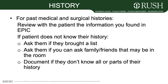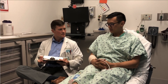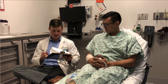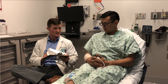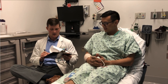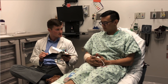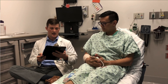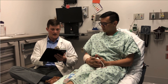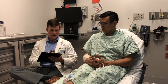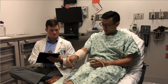For past medical and surgical histories, review with the patient the information you found in EPIC. If the patient doesn't know their history, ask if they brought a list, or ask family or friends in the room with the patient's permission. Document anything unknown. In the demo, Derek reviews: 'I see you have a history of diabetes diagnosed in 2014, congestive heart failure diagnosed in 2009, and hypertension since 2002 — is this correct?' The patient confirms. Derek also confirms an appendectomy in 1988, and the patient adds a recent mole removal two weeks ago.